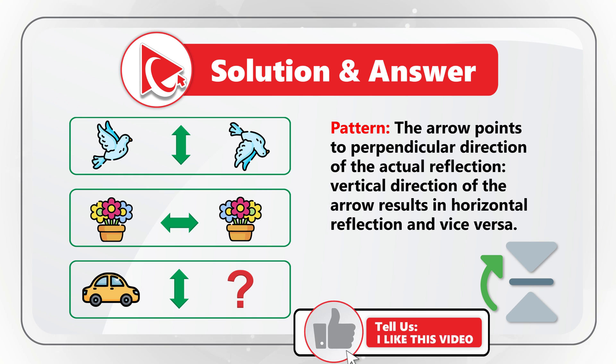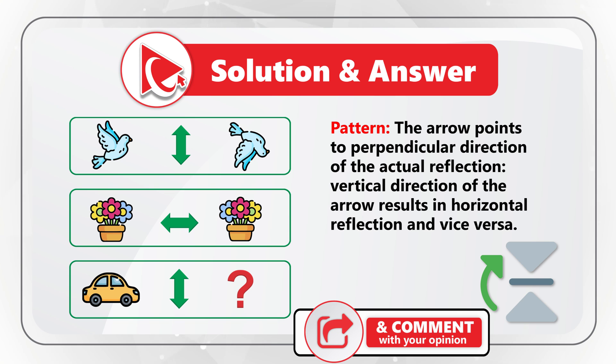Looking at the second object, we see the flowers with the yellow flower on the left. Once we do the conversion — a vertical reflection because the arrow goes from left to right — we see that the yellow flower is now on the right. So the pattern is that the arrow points to the perpendicular direction of the actual reflection: a vertical direction of the arrow results in horizontal reflection and vice versa.